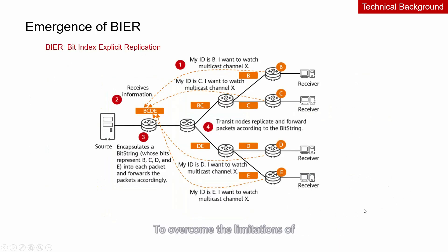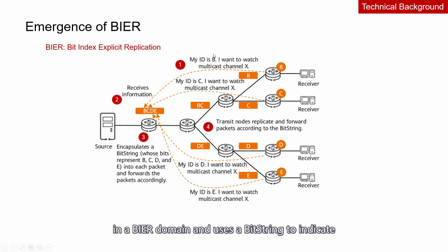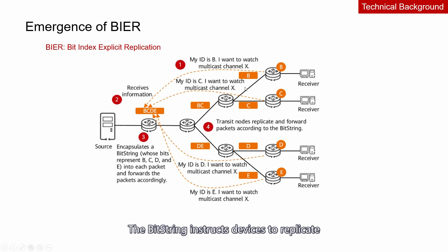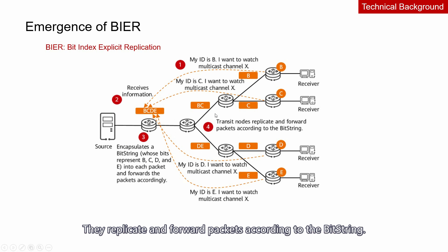To overcome the limitations of conventional multicast technologies, the BIER technology was put forward in the industry. The BIER technology assigns a BFR-ID to the source node and each destination node in a BIER domain, and uses a bitstream to indicate the destination nodes that need to receive data from the multicast source. Each bit in the bitstream represents a specific reservoir node, instructing devices to replicate and forward multicast packets to specified reservoir nodes. The bitstream is encapsulated in the BIER header of each BIER packet. Transit nodes on the network are unaware of multicast group states — they replicate and forward packets according to the bitstream. Therefore, BIER forwarding is stateless.